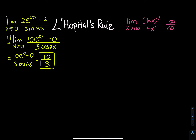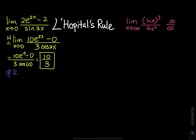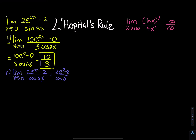In L'Hôpital's rule problems, if you change the function a little bit, that changes the whole thing. For example, if we change the problem to the limit as x goes to 0 of 2e to the 5x minus 2, but with cosine of 3x on the bottom instead of sine, we no longer need L'Hôpital's rule. Plugging in 0 gives us 2 minus 2 equals 0 on top, but cosine of 0 equals 1 on the bottom, so we have 0 divided by 1, which equals 0. This is not an indeterminate form, so no need to apply L'Hôpital's rule.